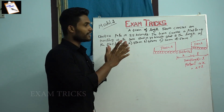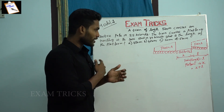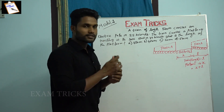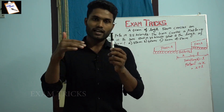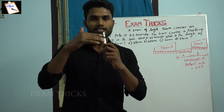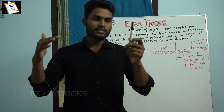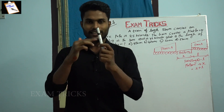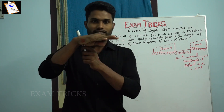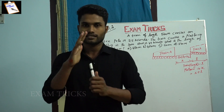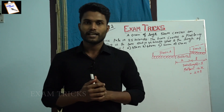Let me explain the concept. If a train crosses a normal electric pole, what is the distance covered? The distance covered is the length of that train. Because the speed formula is speed equals distance divided by time.